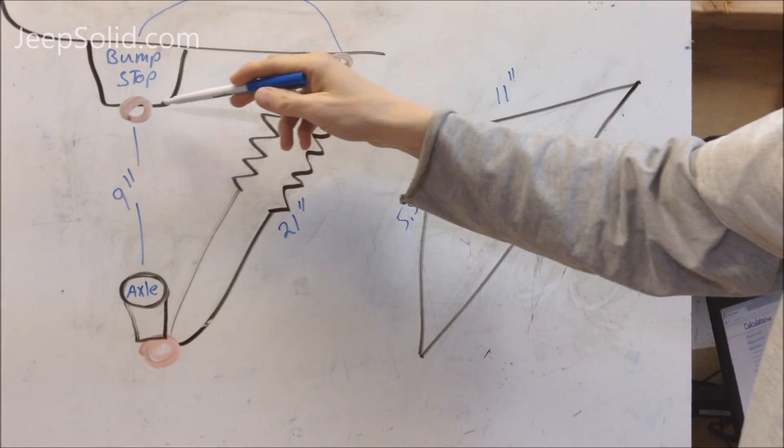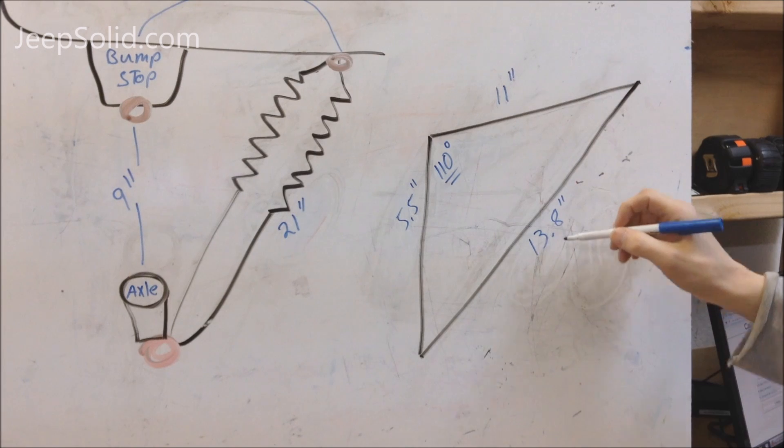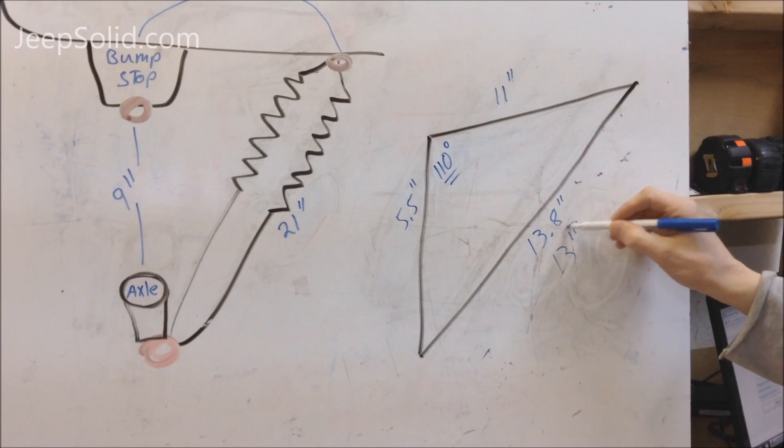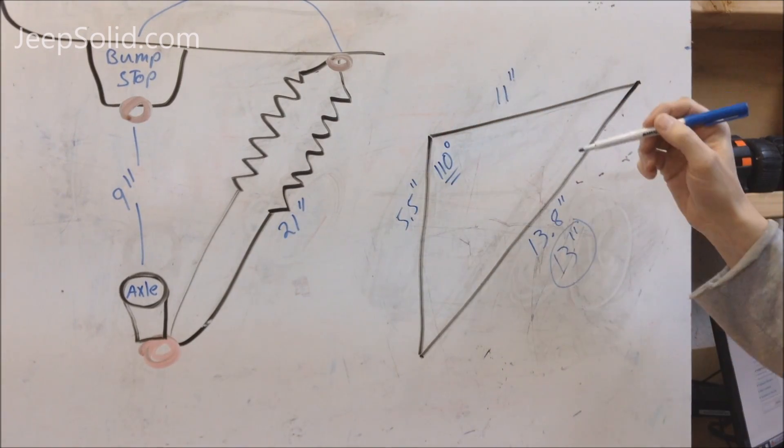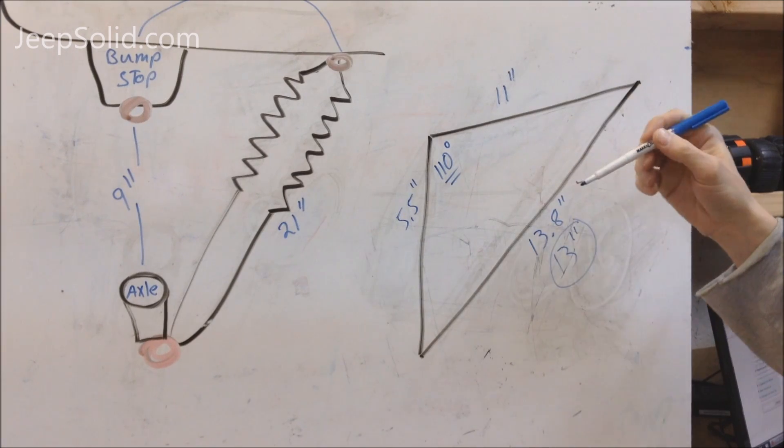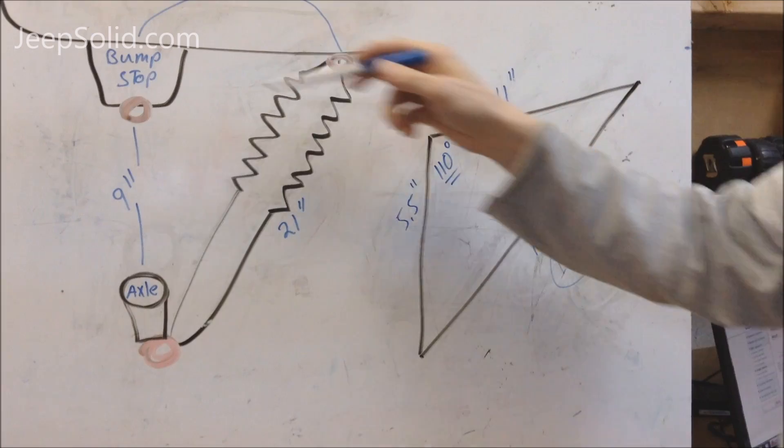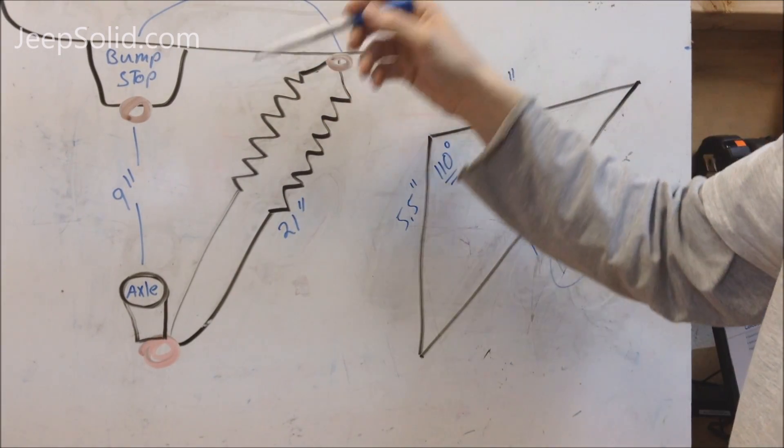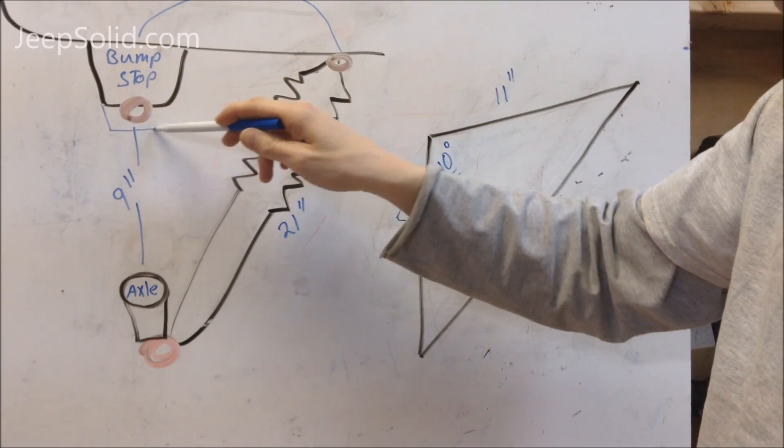So we also want to account for a little compression of the bump stop. So we actually want something shorter than this 13.8, maybe say 13 inches. If you can't find a shock that'll allow for these dimensions that you've figured, the best way to change the minimum length is to change out your bump stop. A lot of Jeeps have a little bit of lift on them. Sometimes you have to change out the bump stop for a bump stop that's a little bit longer.